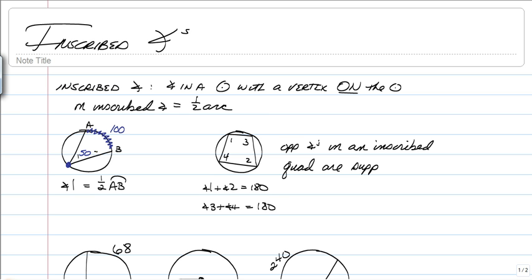One other special case is if you have an inscribed quadrilateral, which means you have a quadrilateral where all four of the vertices are on the circle. Opposite angles will add up to 180. So 3 and 4 are going to add up to 180, 1 and 2 are going to add up to 180. And that's pretty much all the information you need to take on the rest of this set of notes.